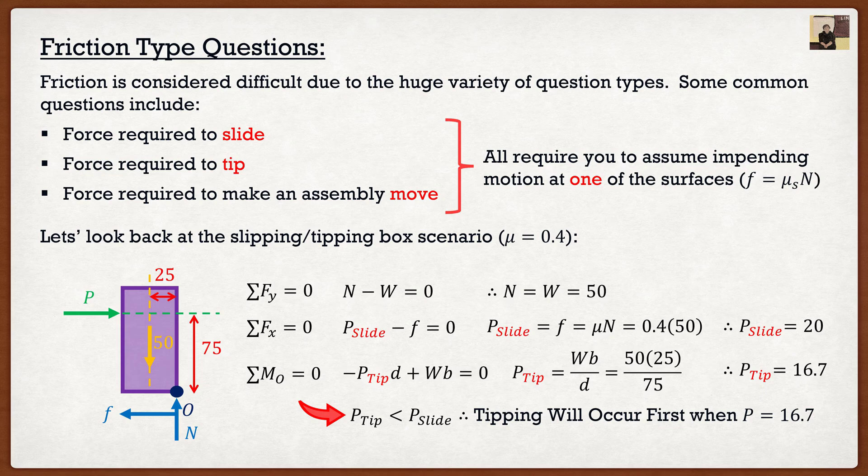So again, the typical friction type question: what is the force required to make it move? Well, that would be the 16.7. That is the lowest force required to cause motion on this box. And then if you're ever given a box scenario, they'll typically ask, will it slide or will it tip? Well, in this case we know that it is going to tip. This is why friction becomes hard, because you have to start analyzing all the mechanics of different things.